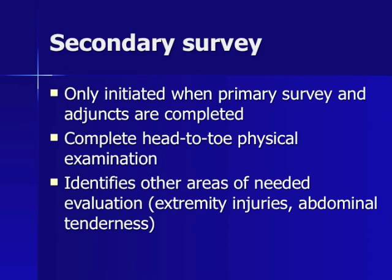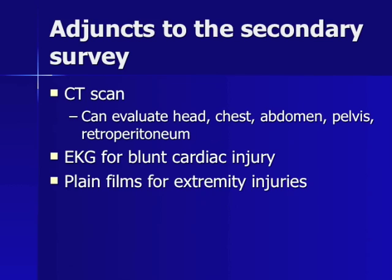The secondary survey refers to a complete head-to-toe physical examination, initiated only when the primary survey and adjuncts are completed. It is intended to detect serious injuries not emergently life-threatening. Adjuncts include CT scan for head, chest, abdomen, pelvis, retroperitoneal injury, and spine trauma, as well as EKG for blunt cardiac injury and plain films for extremity injuries.